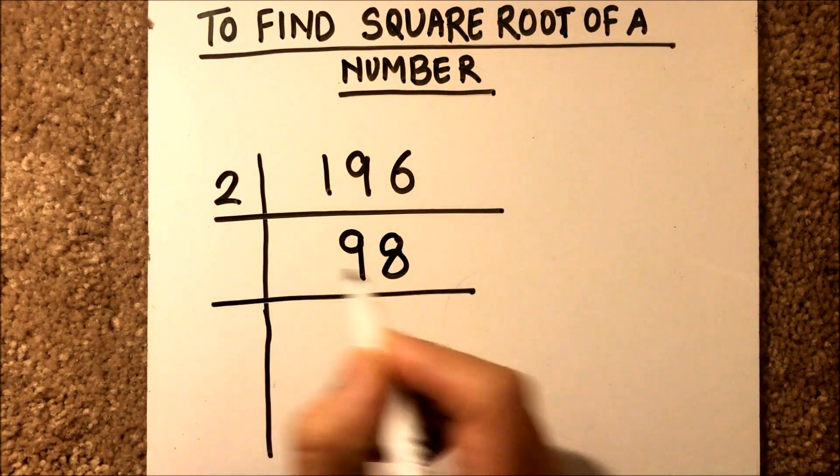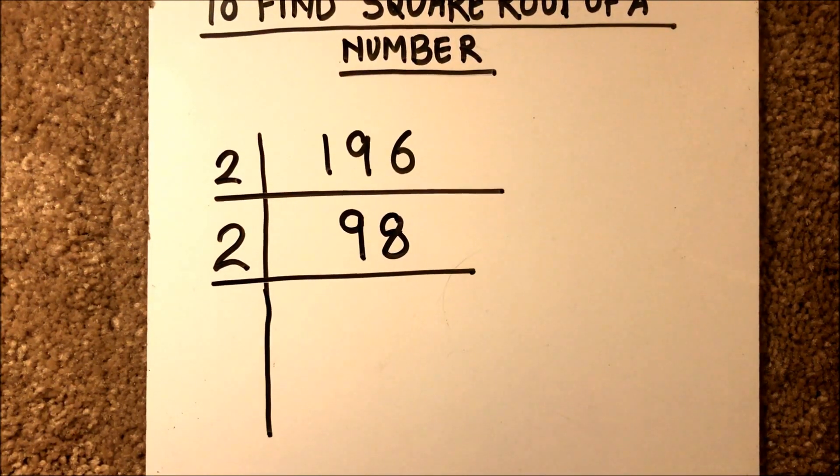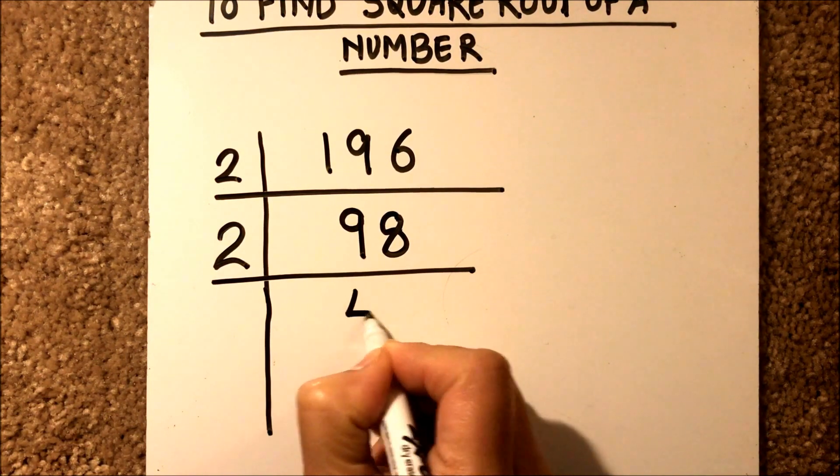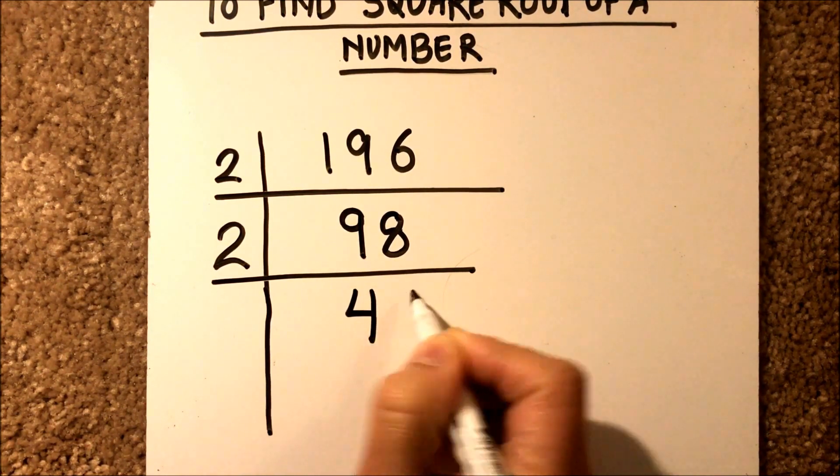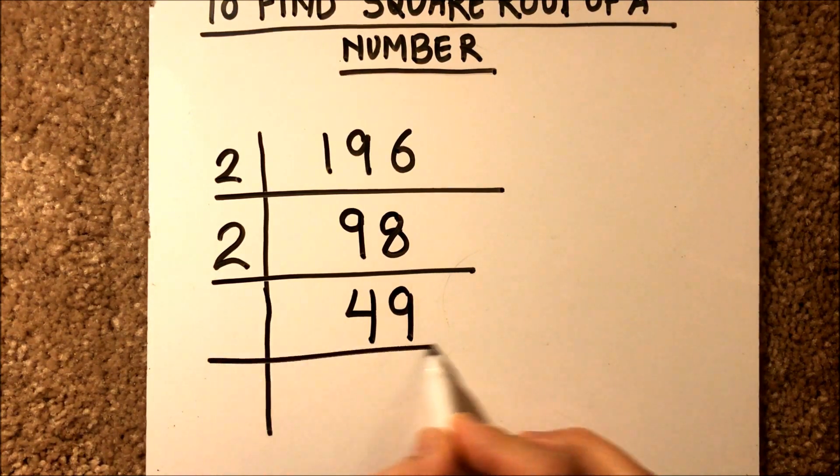Again the number is even, so we will divide it by 2. 2 times 4 is 8, and 2 times 9 is 18.